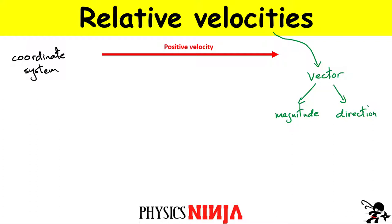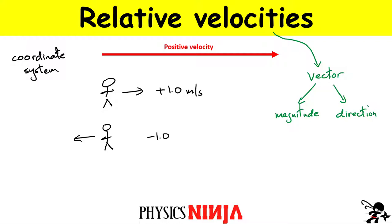In everything that follows, my coordinate system for defining direction will be: anything moving to the right is a positive velocity. For example, a person walking to the right has a velocity of +1.0 m/s. The same person moving at the same speed to the left has a velocity of -1.0 m/s. That is the coordinate system I'll use throughout this video.